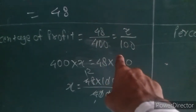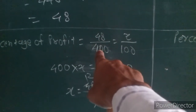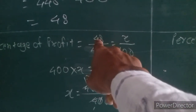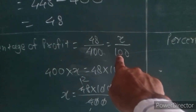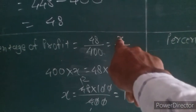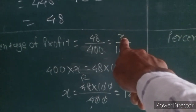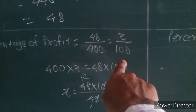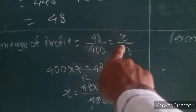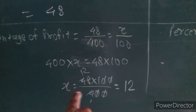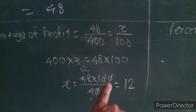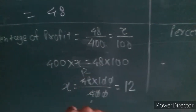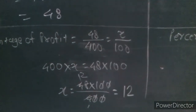Why do we use this type? If the cost price is Rs 400 and we got Rs 48 profit, then if the cost price is Rs 100, how many rupees profit do we get? That is X. Now cross multiplication: 48 into 100 divided by 400. Cancelling zeros: 48 divided by 4 equals 12. So the percentage of profit is 12%.